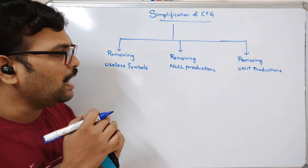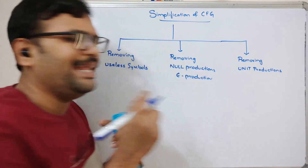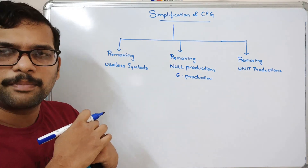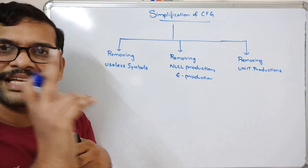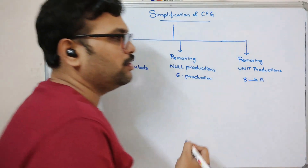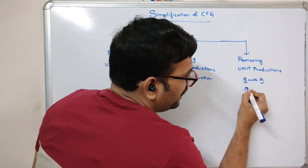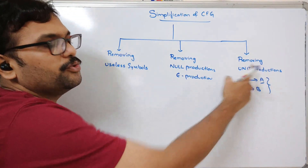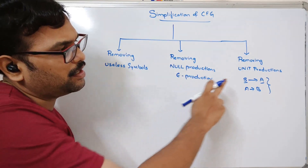Coming to null productions — these are also called epsilon productions. If there are any epsilon productions, we have to remove them, and there is some procedure to be followed while removing null productions. For unit productions: on the right-hand side of the production we'll have a single non-terminal, and that is called a unit production. For example, S tends to capital A, or A tends to B — both sides are non-terminals. We need to remove those unit productions using a substitution procedure.